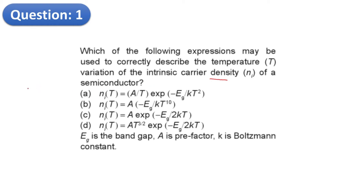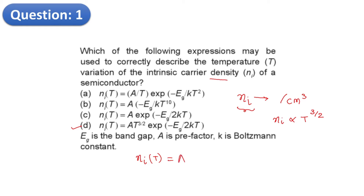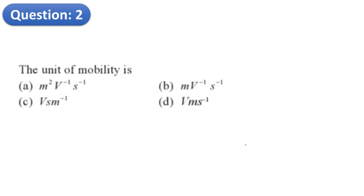The first key point to note is the intrinsic carrier density Ni, whose unit is per centimeter cube. Ni is directly proportional to T to the power 3/2. From the options, option D is the right answer. The intrinsic carrier density Ni(T) equals A times T to the power 3/2 times e to the power (minus Eg divided by 2KT), where A is a pre-factor, T is temperature, and Eg is the band gap energy. The answer to question 1 is D.